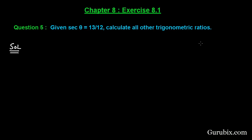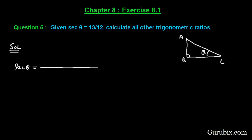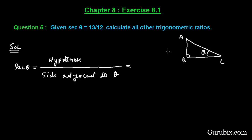Suppose this is a right angle triangle with angle theta at A, right angle at B, and C at the other vertex. We are given that sec theta equals hypotenuse over side adjacent to theta, which is AC over BC, and this equals 13K over 12K. So BC is 12K and AC is 13K.